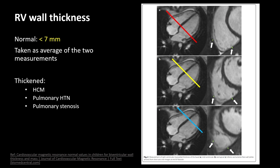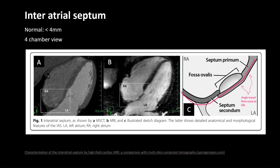For the right ventricle, normal RV wall thickness should be up to 7 mm, and this can be thickened in HCM, pulmonary hypertension, or pulmonary stenosis. The interatrial septum can be measured in the four-chamber view and should be up to 4 mm normally. Here is a detailed anatomy of the septum.